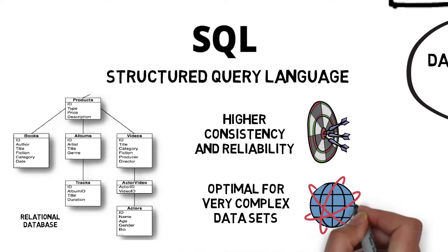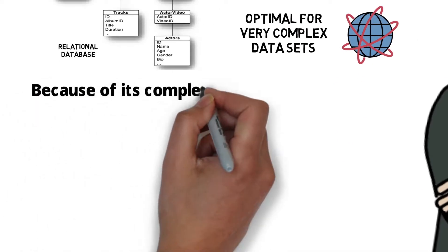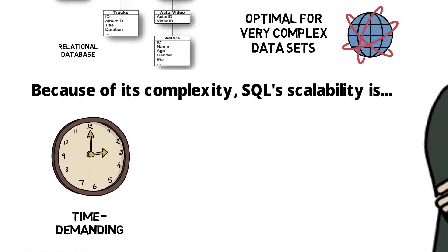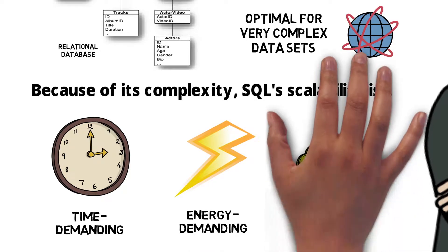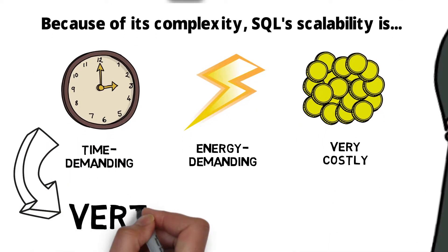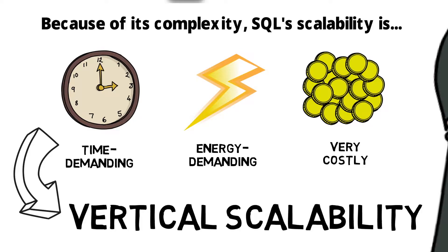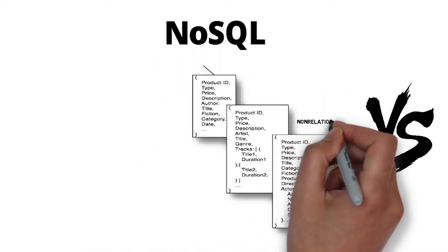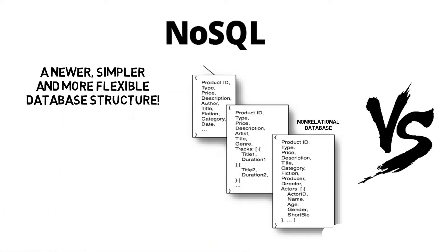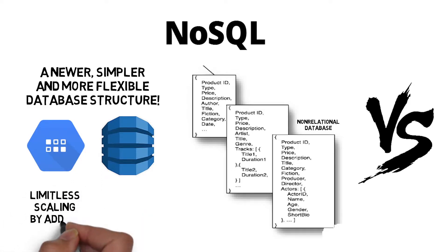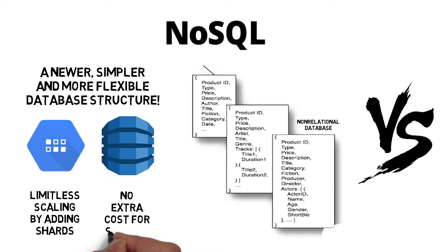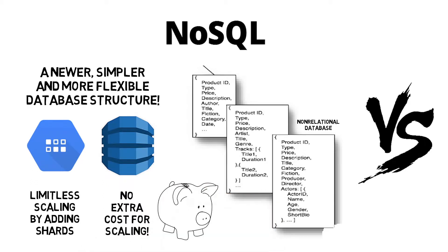With relational databases, because of their complexity, scalability is time-demanding and energy-demanding because more servers are required when we scale — and it's also very costly. When we scale a relational database, we have to use vertical scalability, meaning we increase our servers to maintain traffic volume. A NoSQL or non-relational database allows for more flexibility in the database structure. Google Cloud Datastore, DynamoDB, and Azure Blob Storage have limitless scalability by adding shards — this is horizontal scaling. You replicate the schema and divide data into each shard based on a key, making it much cheaper for scaling.